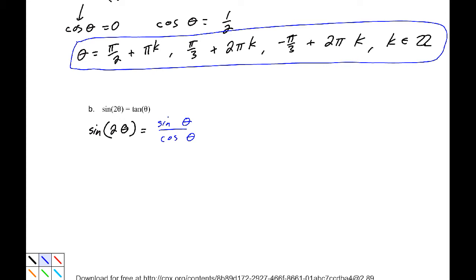Equals sine theta over cosine theta. Writing it in that way, well, you know, there's another identity we could use. We could turn that from sine 2 theta into 2 sine theta cosine theta. So, let's go ahead and rewrite that. 2 sine theta cosine theta.